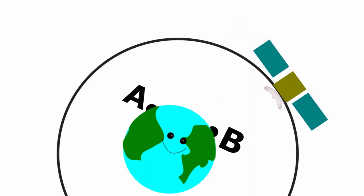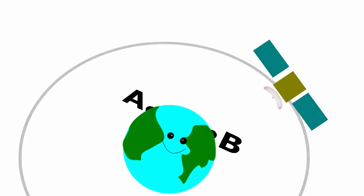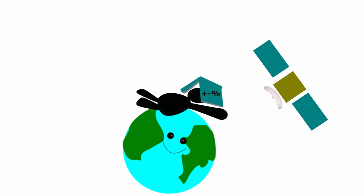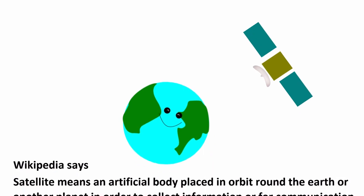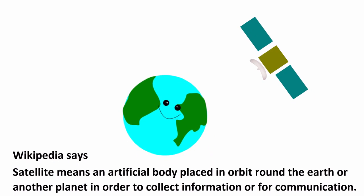That's why scientists need to study math. Wikipedia says a satellite is an artificial body placed in orbit around the Earth or another planet in order to collect information or for communication.